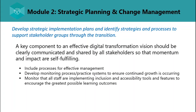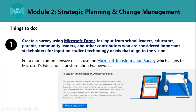Before any work can happen, it is critical to identify the stakeholders who will help to both decide and execute the goals of the school system. Create a survey using Microsoft Forms for input from school leaders, educators, parents, community leaders, and other important stakeholders on student technology needs that align to the vision. For a more comprehensive result, use the Microsoft Transformation Survey which aligns to Microsoft's Education Transformation Framework. The ETF or Education Transformation Assessment Tool is available in the Educator Center, and all links will be pasted in the description below.